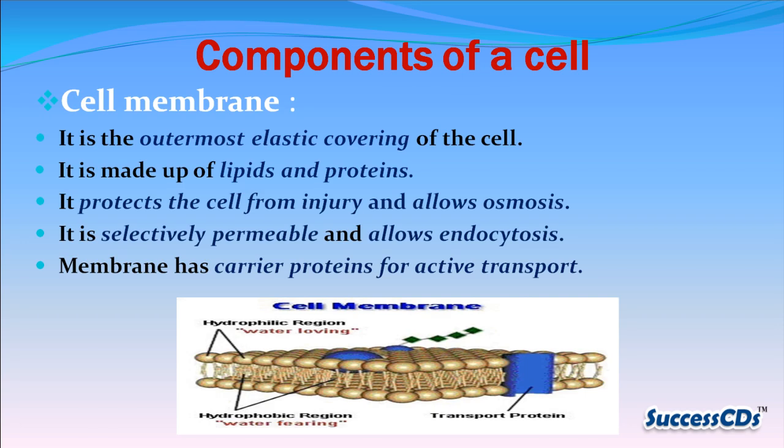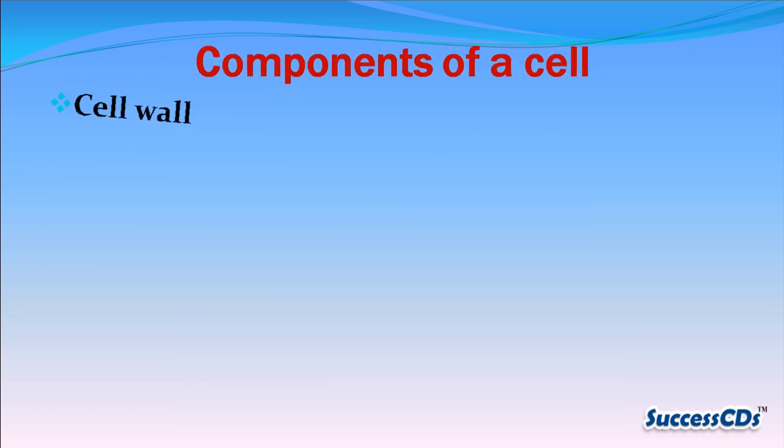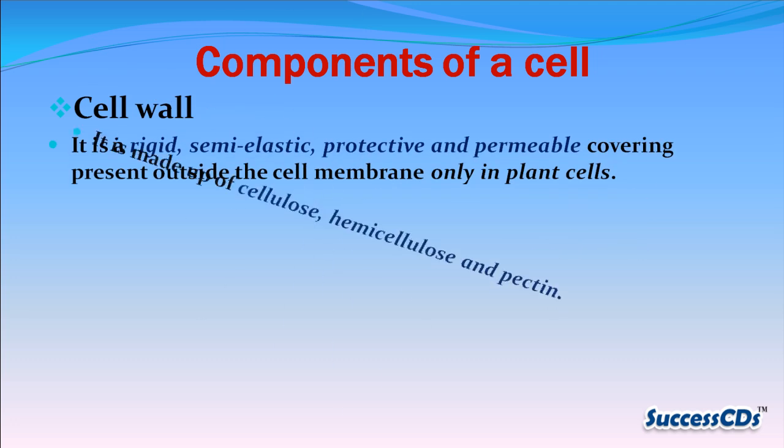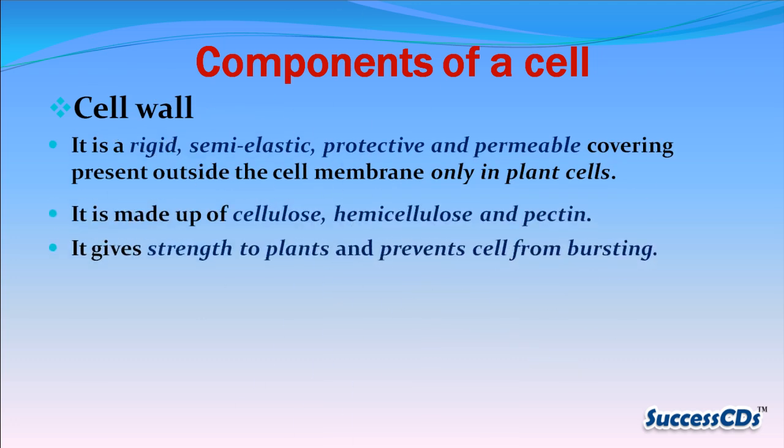Cell membrane: it is the outermost elastic covering of the cell. It is made up of lipids and proteins. It protects the cell from injury and allows osmosis. It is selectively permeable, allows endocytosis, and has carrier proteins for active transport.